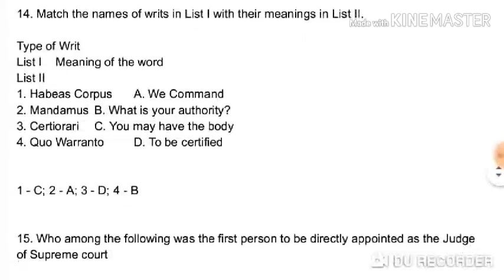Which law deals with intellectual property protection for horticultural products? The Protection of Plant Varieties and Farmers' Rights Act. Regarding writs and their meanings: habeas corpus means 'you may have the body' — bring the body before the court. Mandamus means 'we command' — whenever an authority is not performing its duty the court can command it to do so. Certiorari means 'to be certified.' Quo warranto means 'by what authority are you holding the position.'